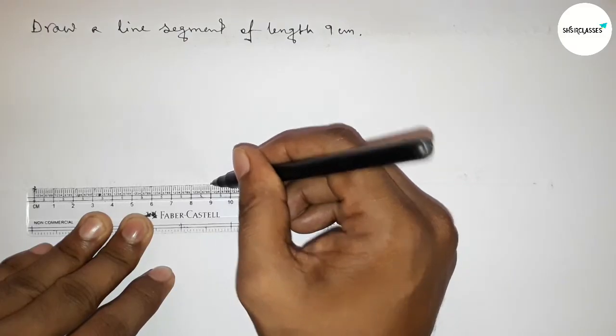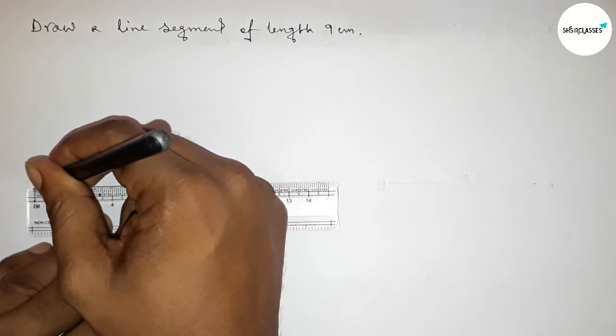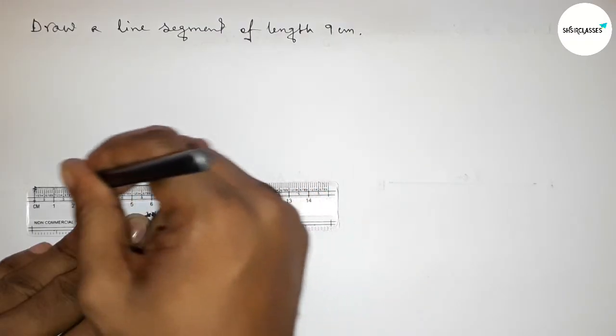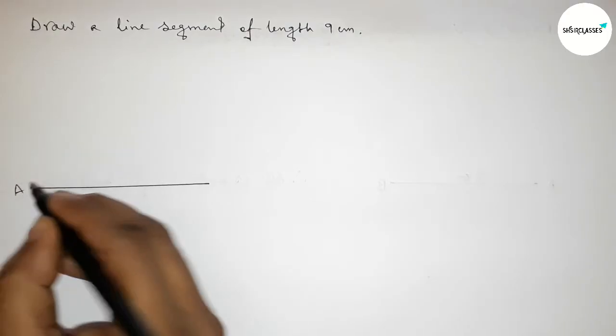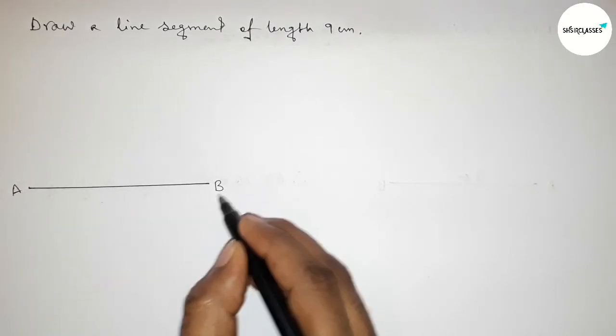We have to mark 9 centimeters here and join the line perfectly. Now taking here point A and here B.